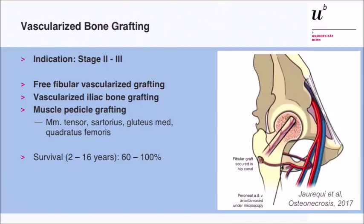Vascularized bone grafts are indicated for more advanced pre-collapse or early collapse stages. Options include the free fibular graft placed in the core decompression tunnel with the peroneal vessels anastomosed to the lateral circumflex femoral artery; a pedicled bone graft from the iliac crest based on the deep circumflex iliac artery; and muscle-pedicled grafting techniques using the tensor fascia lata, sartorius, gluteus medius, or quadratus femoris, depending on the lesion location. Survivorship results also show quite a wide range at long-term follow-up.